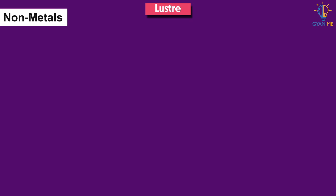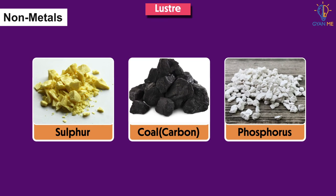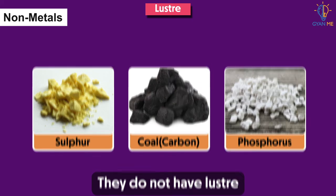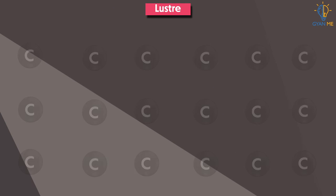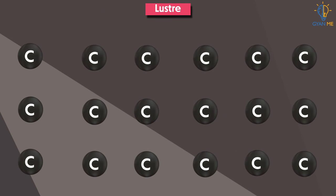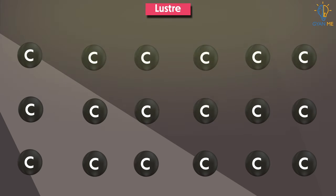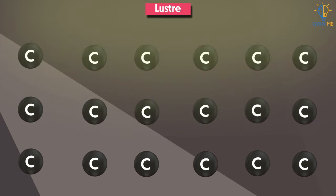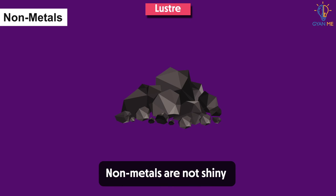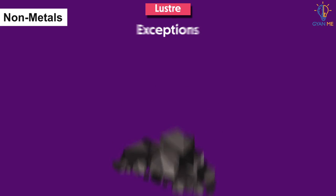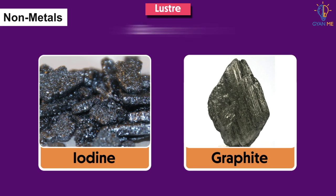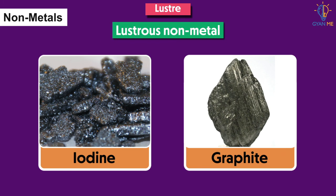While non-metals have a dull appearance — that is, they do not have lustre. As non-metals do not have any free electrons in their orbit, when light falls upon them, they do not reflect light, and hence non-metals are not shiny. But exceptions to these are iodine and graphite, which are lustrous non-metals.